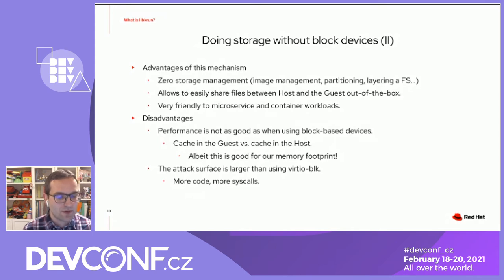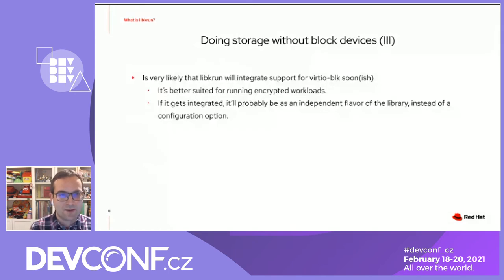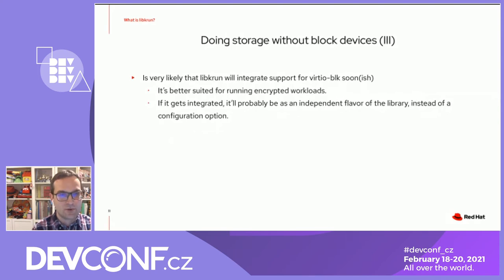That said, it's very likely that LibKRun will integrate support for VirtioBlock in the future. The main reason is that it's better suited for running encrypted workloads — the attack surface is lower and we don't need as many syscalls, so we can build a stricter seccomp policy. In that case, instead of having some directory on the host, there will be some kind of trusted component on the platform that takes the guest payload, creates a disk image, applies encryption on the disk image, and stores the guest payload inside it. If VirtioBlock gets integrated in LibKRun, it will probably be as an independent flavor of the library rather than a configuration option.